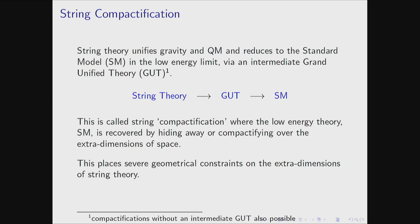In most approaches to string model building, the gauge group of string theory is broken to the gauge group of a grand unified theory, for which there are phenomenological reasons. This in turn is broken to the standard model gauge group. This whole business is called string compactification, where the low energy theory is recovered by hiding away the extra dimensions.